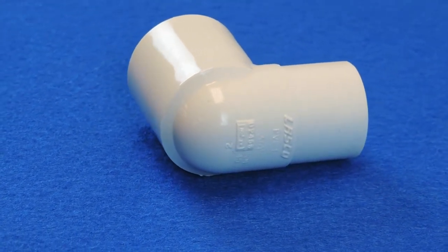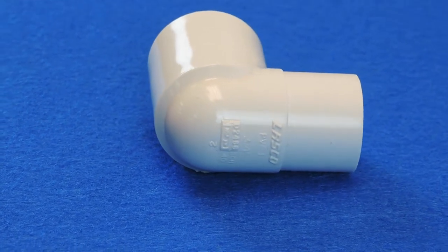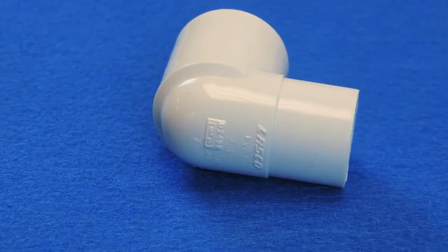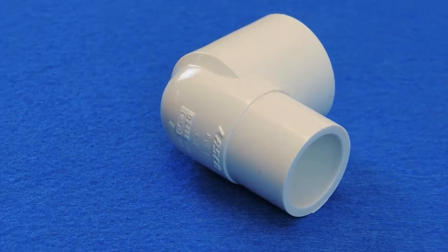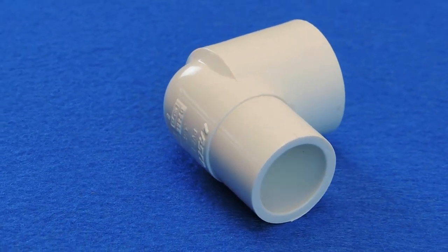This street L has as the spig side a spig fitting which will glue into another fitting, and as an incoming side has a female pipe thread that will accept the male threaded pipe end.